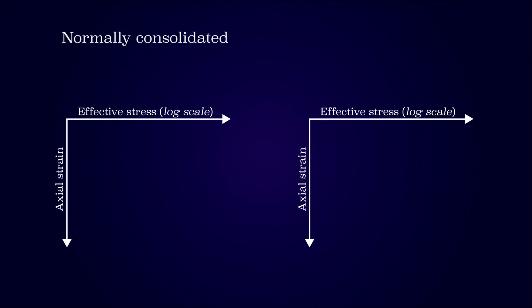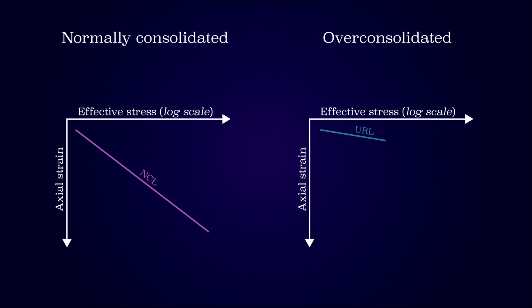The results from an odometer test is a stress-strain curve. For normally consolidated soils, the curve is linear in a semi-logarithmic graph. This is referred to as the normal consolidation line, NCL. For overconsolidated soils, the soil will have a stiffer response at the beginning, which is referred to as the unloading-reloading line, URL.